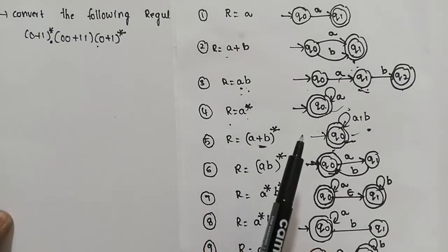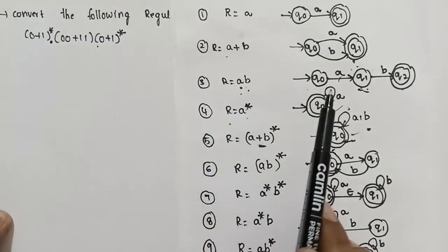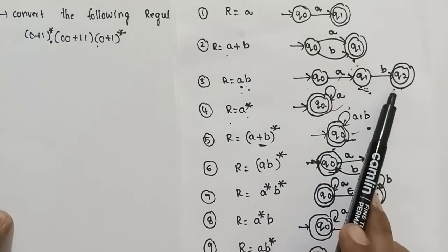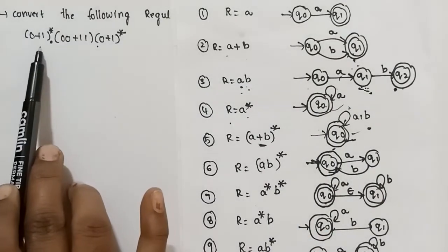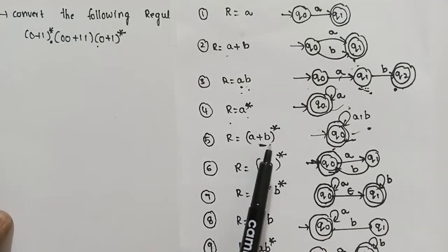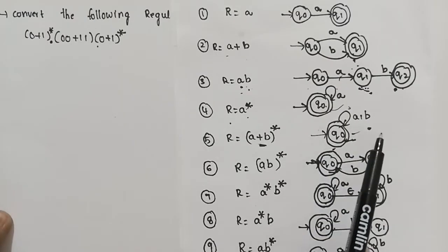The concatenation has been represented by A, B. Q0 on input A goes to Q1, and Q1 on input B goes to Q2. For the expression 0 plus 1 star (that is, A plus B star), Q0 has a self-loop on A and B.